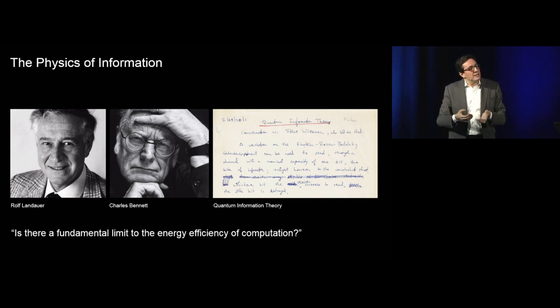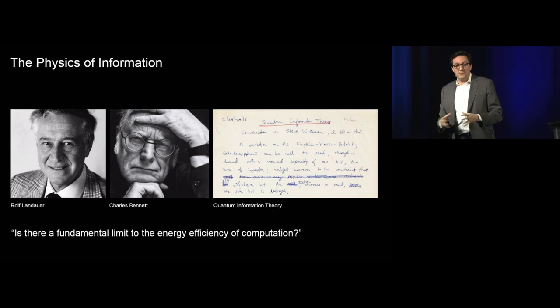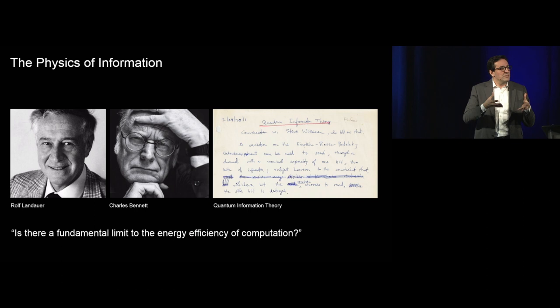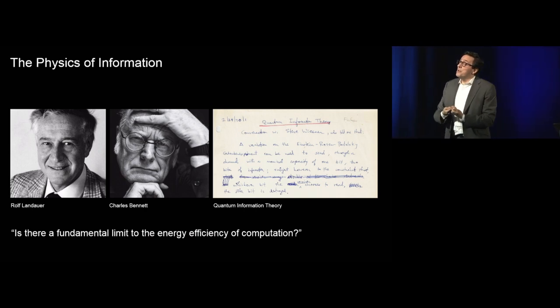Rolf was an IBM fellow and an extraordinary physicist. As physicists, they began to start asking specific kinds of questions probing into that assumption that Claude Shannon had put forth of separating physics and information. They would ask questions like: Is there a fundamental limit to the energy efficiency of computation? Or, is information processing thermodynamically reversible? Pulling down that thread, it emerged a new area, which we now know as quantum information theory.